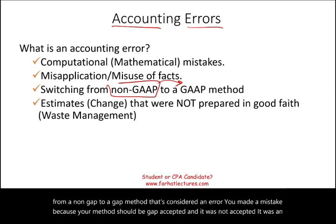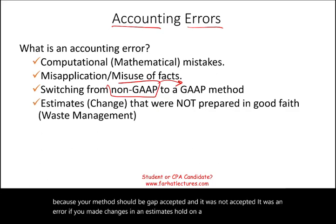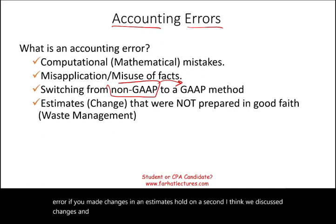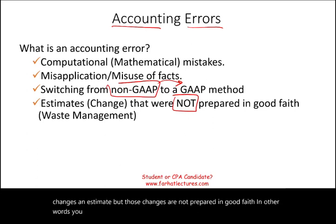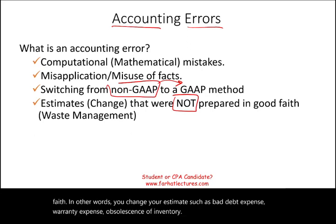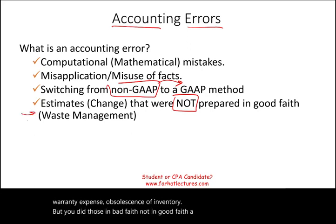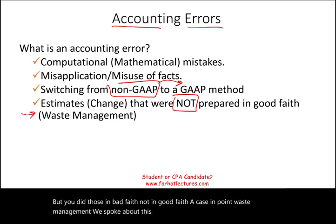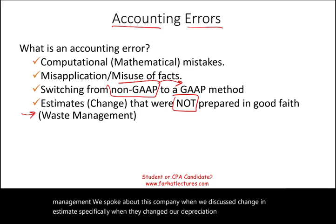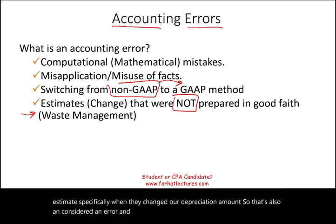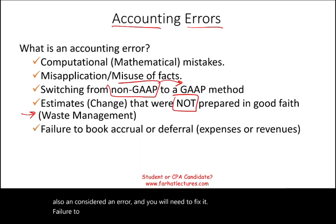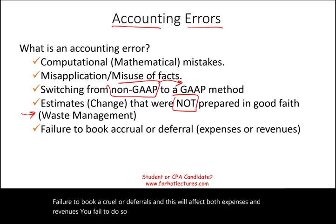If you made changes in estimates, but those changes are not made in good faith — for example, you changed estimates such as bad debt expense, warranty expense, or obsolescence of inventory in bad faith — that's also an error, as seen with Waste Management and their depreciation changes. Additionally, failure to book accruals or deferrals, which affects both expenses and revenues, is an oversight and an error.